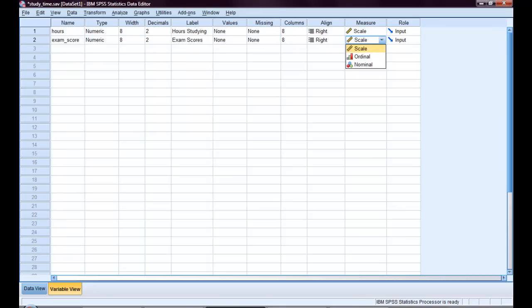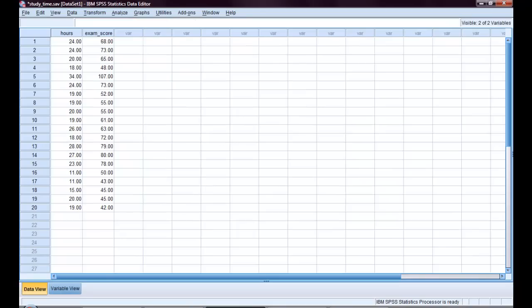The reason they need to be scale is because you can only correlate continuous variables. They can't be nominal or ordinal. And then just make sure all your data is there.